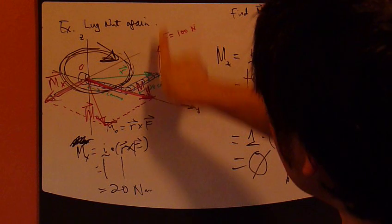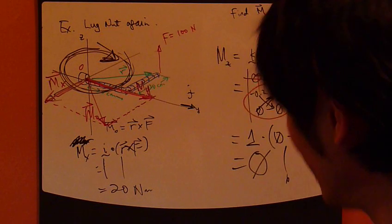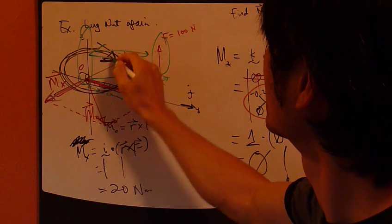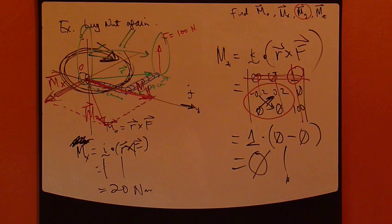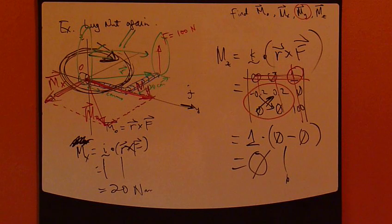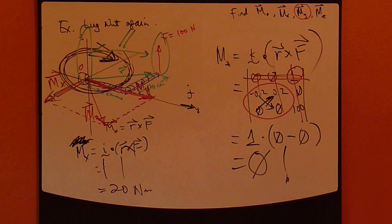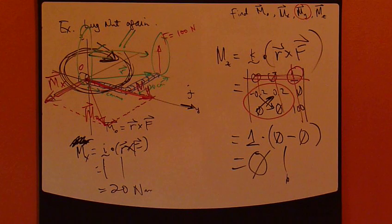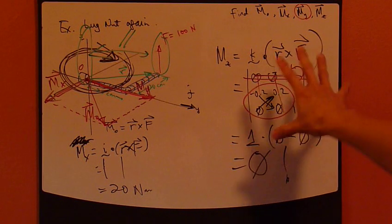That's because this force is parallel. Okay? Parallel to z-axis. Parallel. Okay? So, that's the conclusion. Any force that's parallel to an axis does not create any moment about that axis. Okay? And, you have this math to back you up.